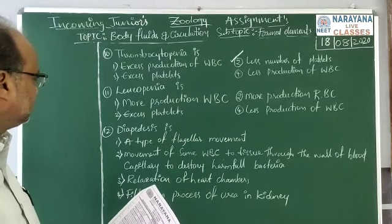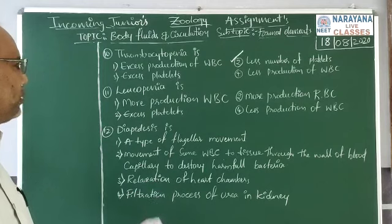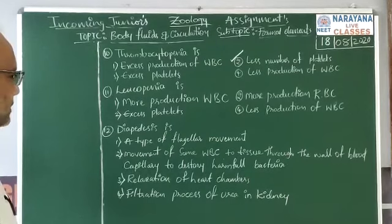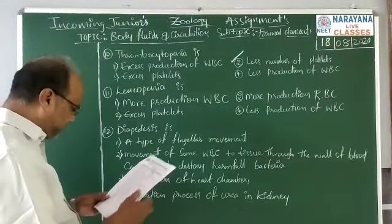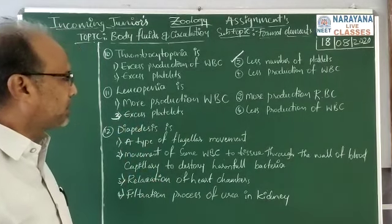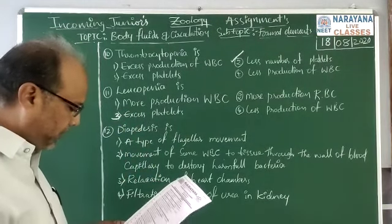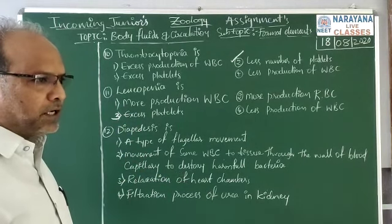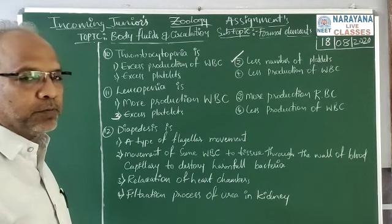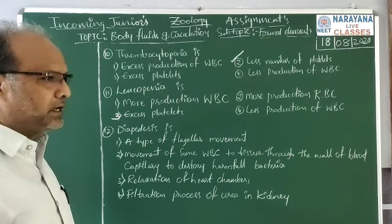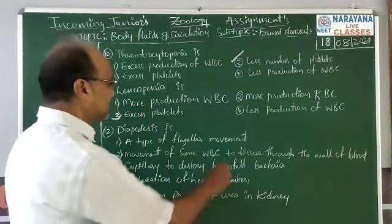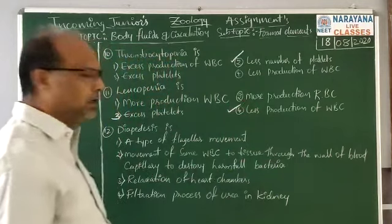Question number eleven: leukopenia. The options are: more production of WBC; more production of RBC; excess platelets; less production of WBC. WBC count in a normal person is around 6,000 to 8,000 cells per cubic mm of blood. If it is less than this, the condition is called leukopenia. So the correct option is less production of WBC.